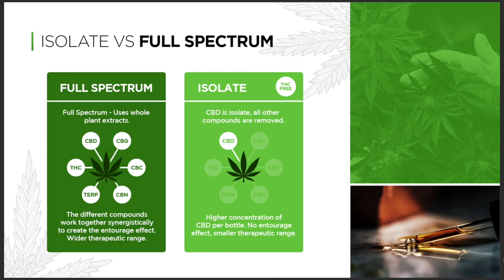Isolate versus full spectrum — this is a question I've been getting a lot lately. What's the difference? Full spectrum uses the whole plant extract, so you're going to get your CBD, your CBG, your CBC, your CBN, your terps, and your THC — and that's only going to be small traces.